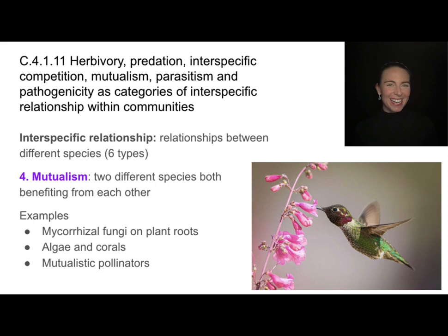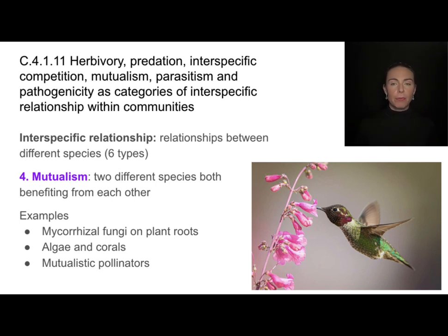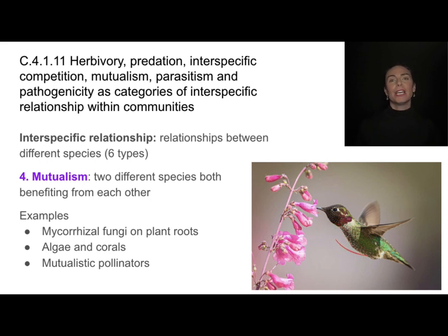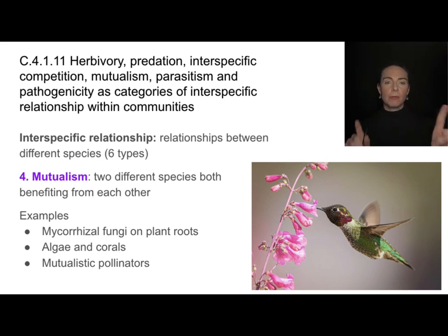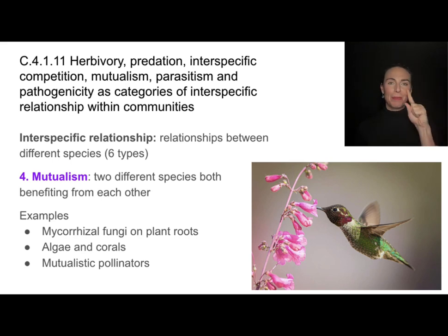Another way species can have relationships in a community is through mutualism — when two species interact and both benefit. For example, a hummingbird gets nectar from a flower while the flower gets pollinated. Other examples include mutualistic pollinators, algae and coral, and plants with mycorrhizal fungi on their roots that increase surface area. Both species benefiting is the key feature of mutualism.